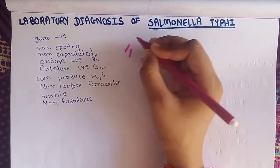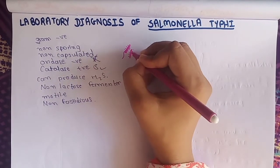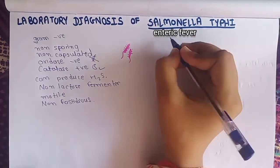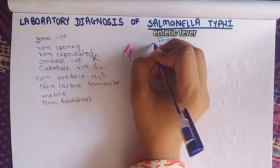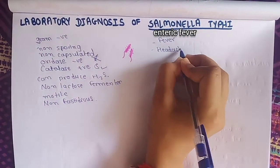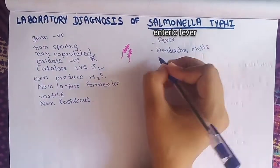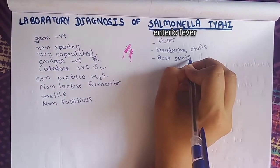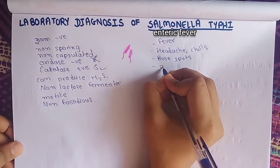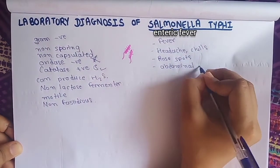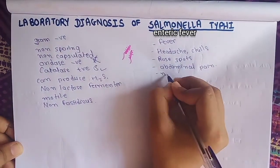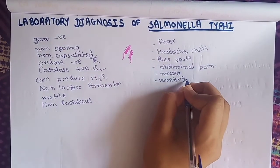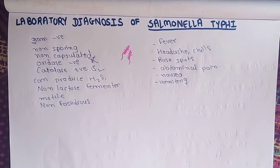Salmonella typhi appears as pink-colored gram-negative rods with pili and flagella. Because of Salmonella typhi infection, one can suffer from fever, headache, chills, and rose spots — rashes on the skin mainly found on the trunk in 30% of cases — as well as commonly abdominal pain, nausea, and vomiting, among other symptoms.